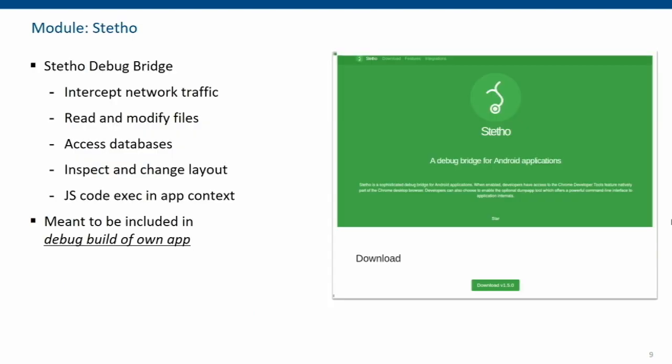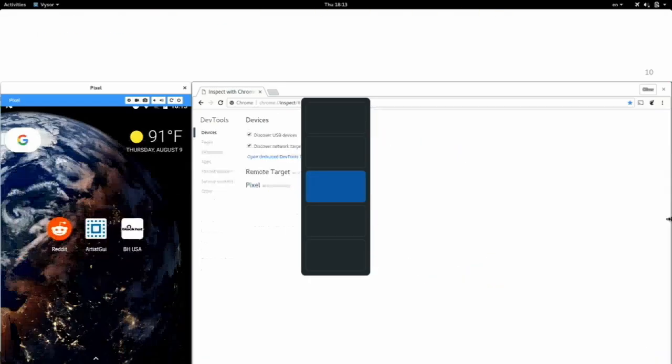There's one particular module I want to showcase. How many of you have heard of the Stetho library from Facebook Engineering? The basic idea is you add it to the debug version of your app, and the library connects your app to the Chrome developer tools running on your PC, so you can debug your app as if it were a web app — seeing all the files, the database, and even executing JavaScript. So what do you think happens if you inject this into arbitrary processes? Let's see this demo.